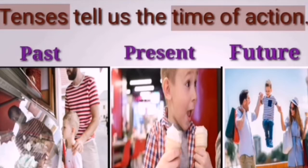Let us understand what past, present, and future tense mean. In example one, you can see: 'The boy went through the market.' The action is over — it happened in a previous period — so this type of action is called past tense. In the second example, you can see: 'The boy eats an ice cream.'